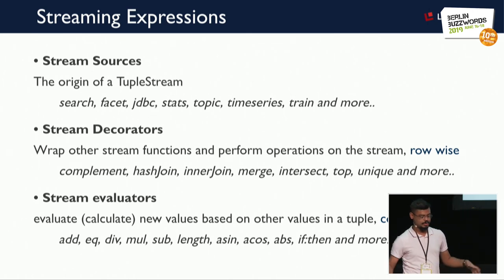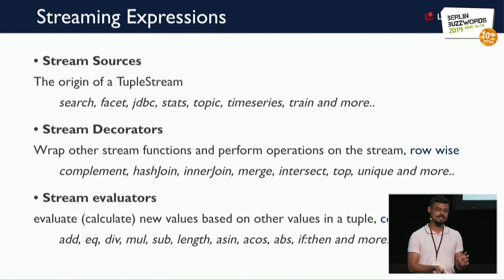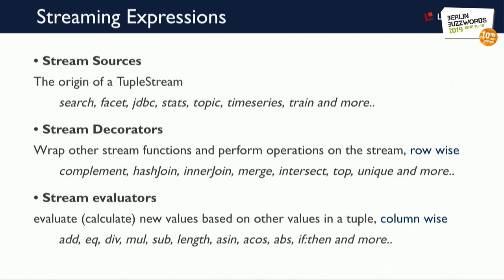You then wrap your stream sources with stream decorators. If you want to perform row-wise operations — merge result sets, make an inner join, select only the top five, or retrieve unique values — you use stream decorators. If you want to add a new field value based on existing values in a single row, performing column-wise operations, you use stream evaluators. These support mathematical operations like addition, subtraction, sine, cosine, tangent, as well as conditional statements like if-else-then.